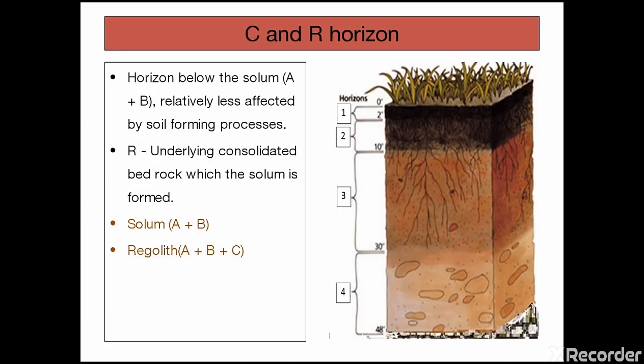Next is C horizon. Below A and B horizons forms C horizon. So what are A and B horizon combinedly called as? A horizon and B horizon combinedly called as solum.